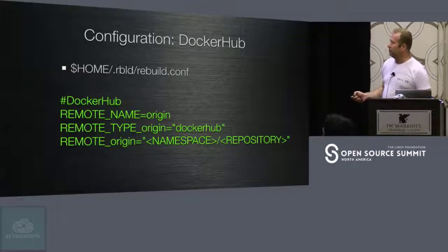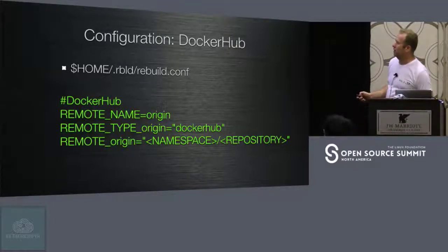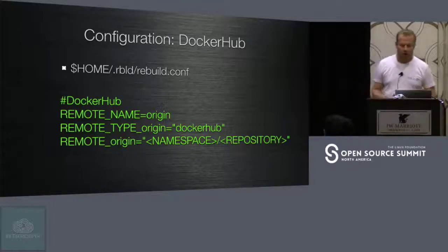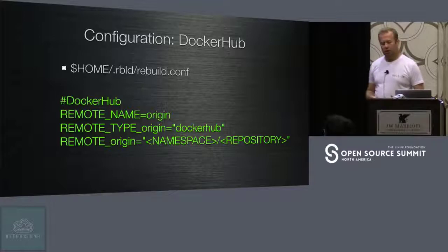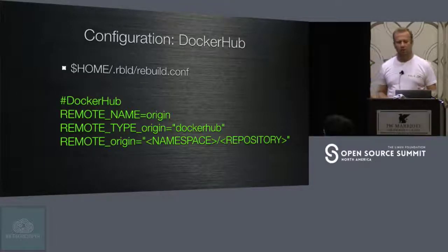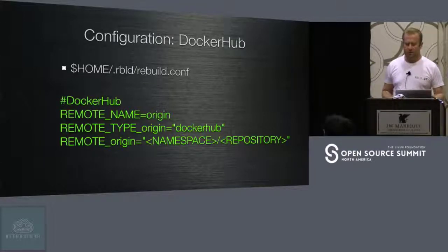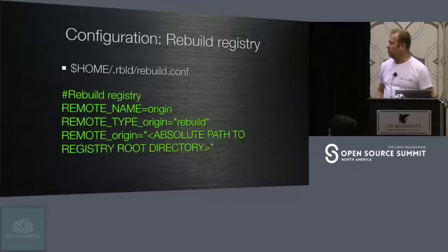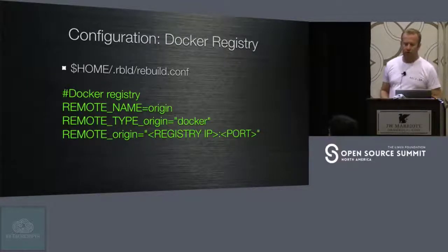There is a configuration file for rebuild located in your home directory under .rebuild/rebuild.conf. In this file you can configure different options — what type of registry to use for your environments. This is how you configure Docker Hub, the rebuild native environment, or Docker private registry.